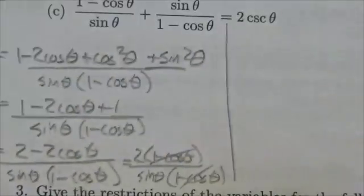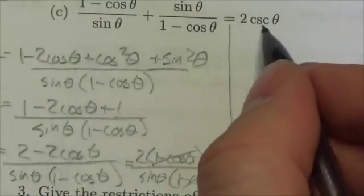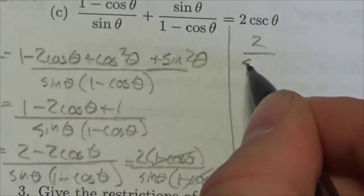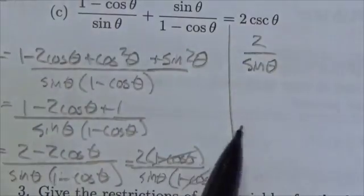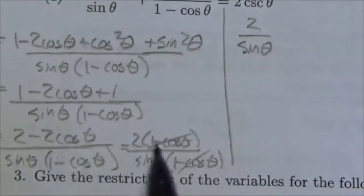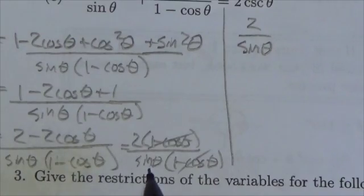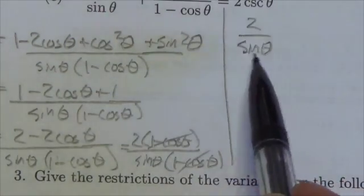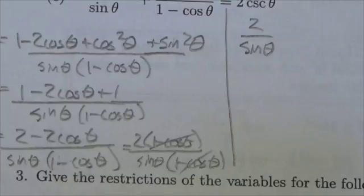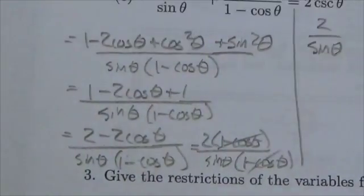And then maybe what I'll do is over here, I'll rewrite this right-hand side as 2 over sine theta. And now you see that the left-hand side, the 2 over sine theta, is equal to the right-hand side 2 over sine theta. I just didn't give myself enough room to do that.